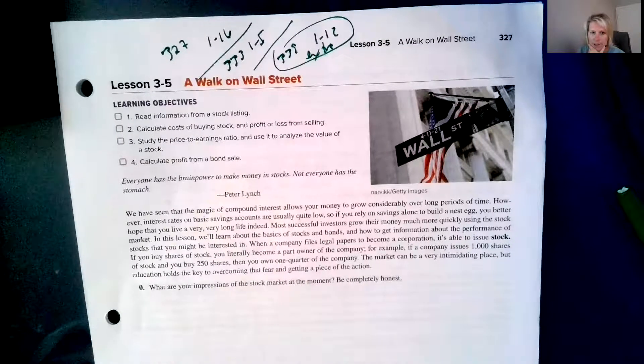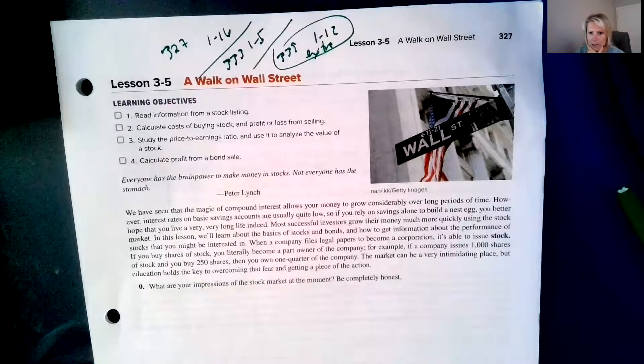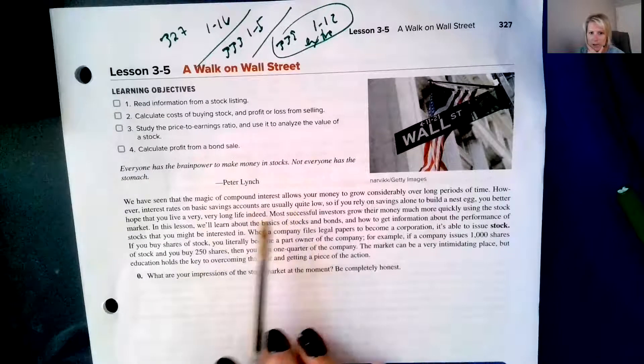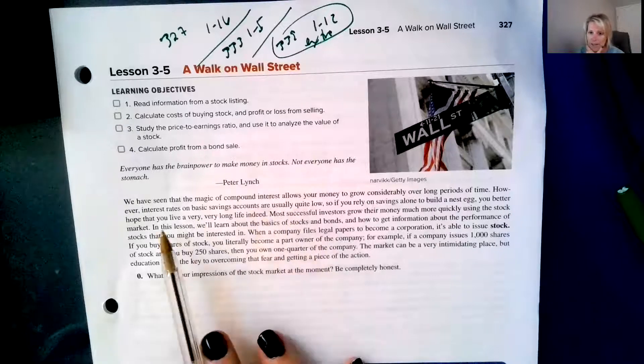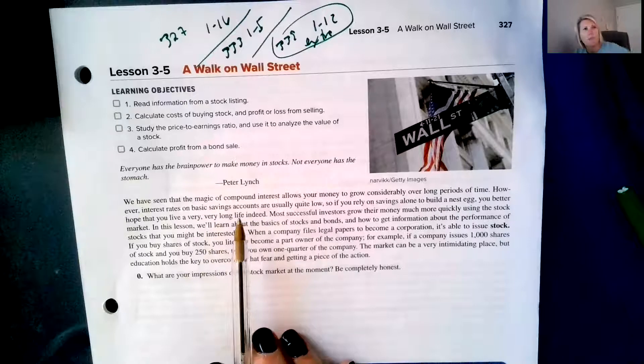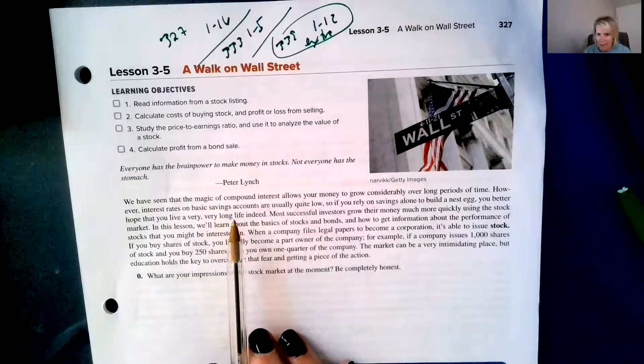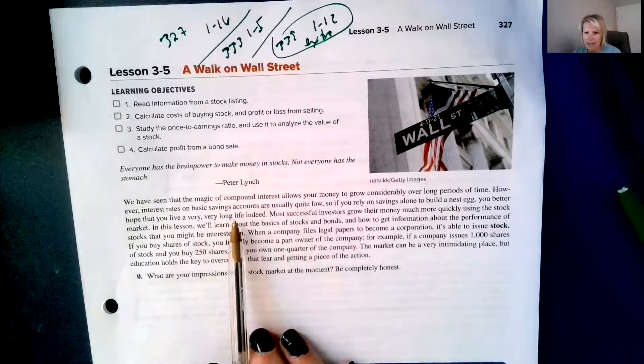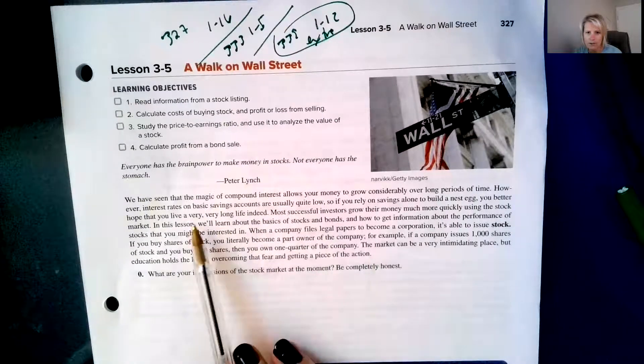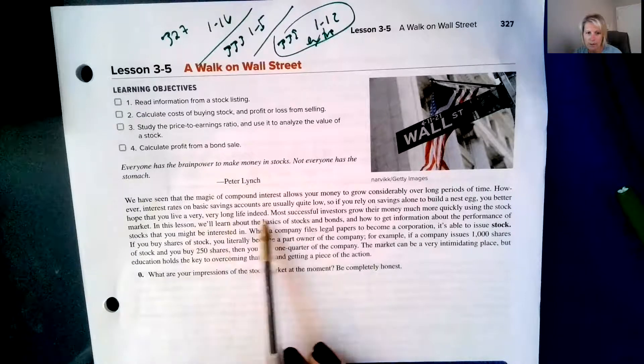So it says we have seen that the magic of compound interest allows your money to grow considerably over long periods of time. However, interest rates on basic savings accounts are usually quite low. So if you rely on savings alone to build a nest egg, a nest egg is like money that you're going to save up to retire, you better hope that you live a very, very long life indeed.